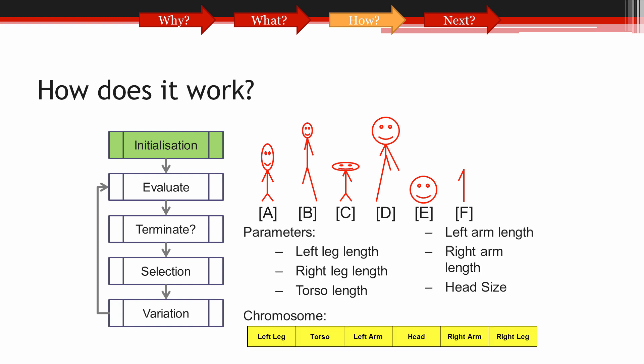It's important to define our data structure, often referred to as a chromosome in the context of evolutionary algorithms. This chromosome simply stores a set of items, or genes, which describe our solutions. We can think of this as some type of blueprint. Here we have a population of six solutions, which I have labelled A through to F. Each solution is defined by its own chromosome. And here you can see that each chromosome stores six different genes. These describe the lengths of the arms, legs, torso, and the size of the head for each solution.